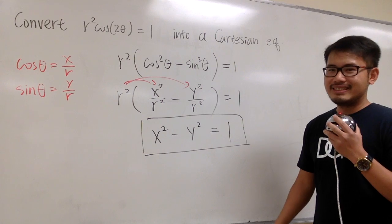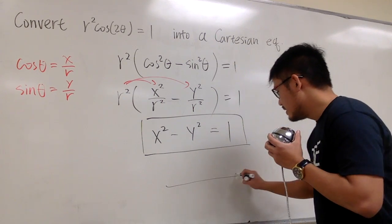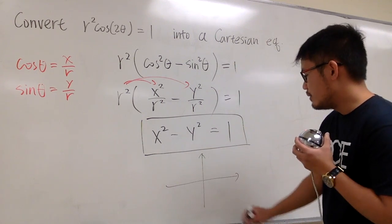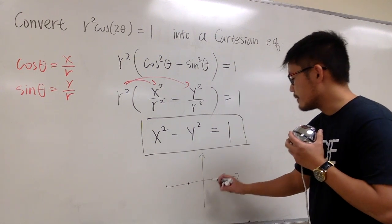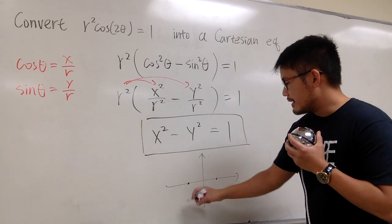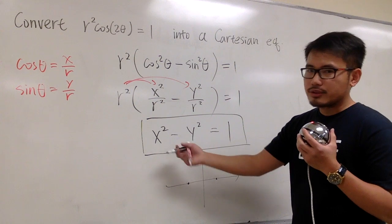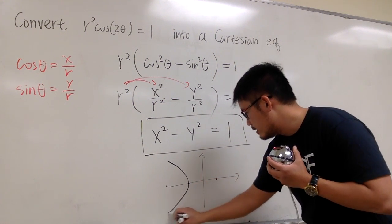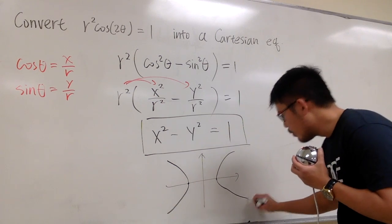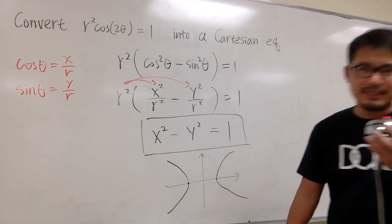Small remark. How does this look like? The graph of this is a hyperbola. And you can just do it real quick. You know the vertex right here is at 1, 0 and negative 1, 0. And since x goes first, so you have a hyperbola that looks like this, open left and open right.